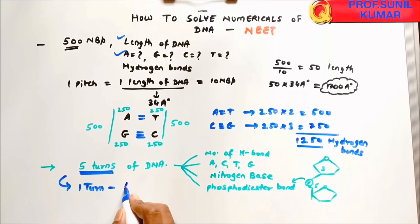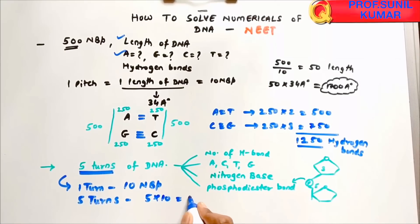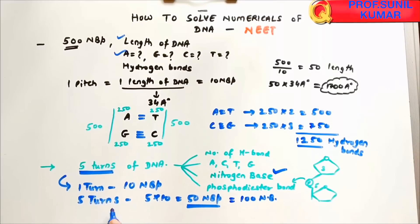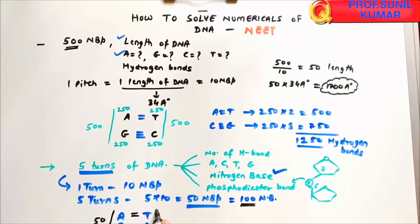50 nitrogen base pairs equals 100 nitrogen bases. Since A pairs with T and C pairs with G, and there are 50 bases per strand: A = 25, T = 25, C = 25, G = 25. For hydrogen bonds: A and T have double bonds — 25 × 2 = 50 hydrogen bonds.